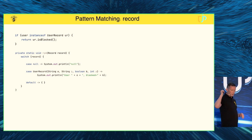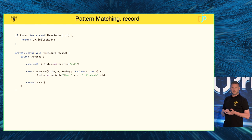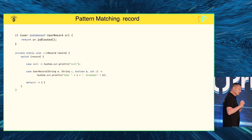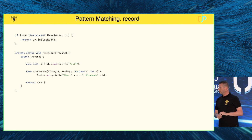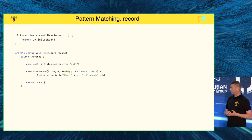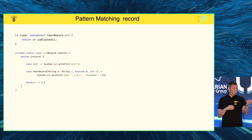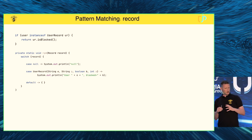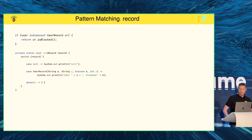In the second case, you write 'UserRecord(String e, String p, boolean b, int i)' — and this is destructuring the record. Rather than a constructor where you apply individual values to create an object, here you take an object and pull it apart into individual fields. The email address goes to 'e', the password to 'p', and so on. That is a really powerful construct.